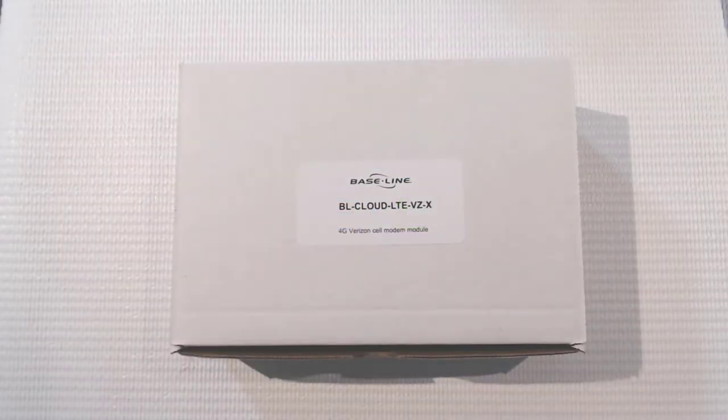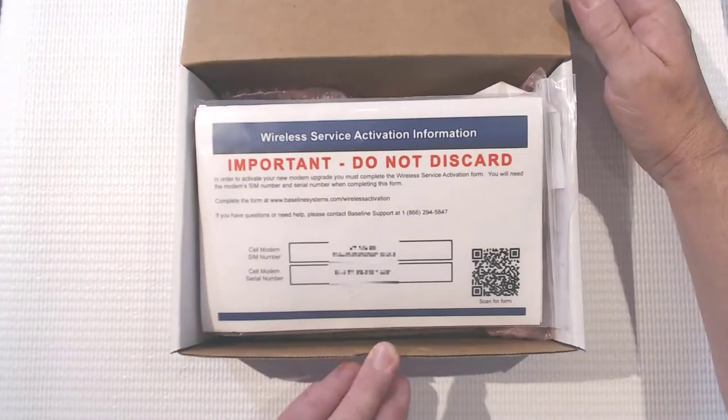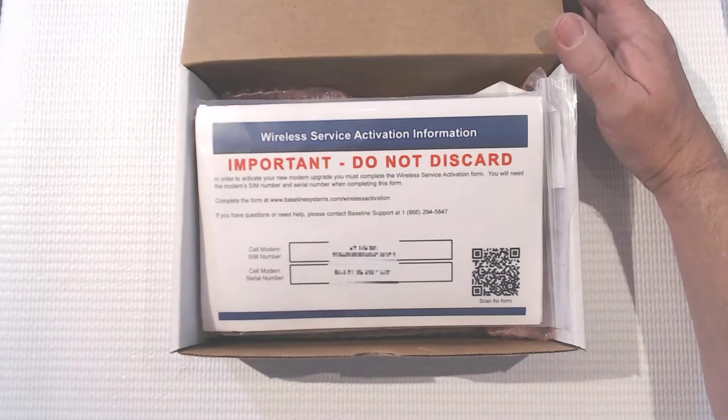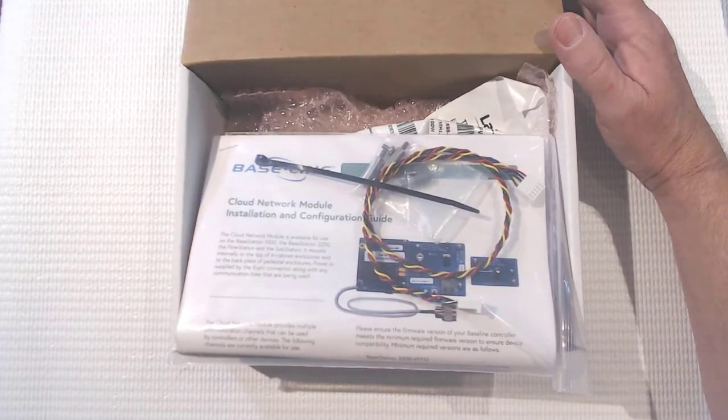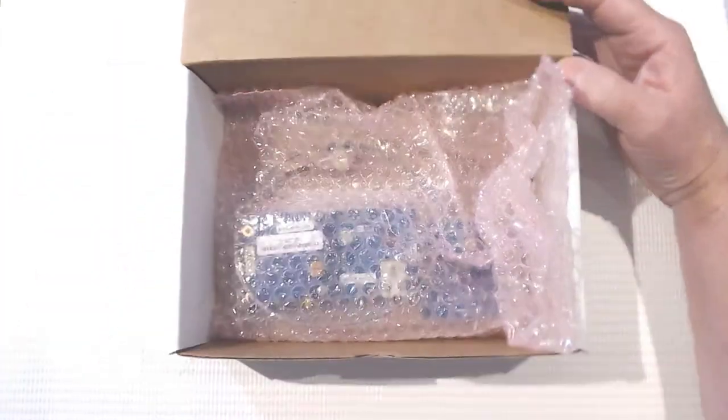This video will help you understand how to set up your baseline cell modem module. Here's what's in the box: wireless service activation info, a power cord, mounting screws, a zip tie, a salt shaker antenna, and the cell module itself.